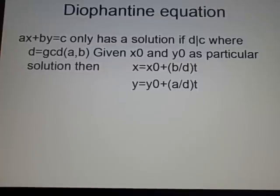Right, the Diophantine equation, this is where you get an equation like ax plus by equals c, and a and b are just integers here. And it has a solution if d divides c, where d is the greatest common divisor of a and b. Now, given x0 and y0 as a particular solution, which I'll show you how to find later, then you can give the final solution for all different values of t greater than 0, and less than actually.